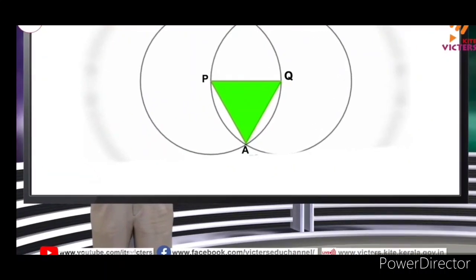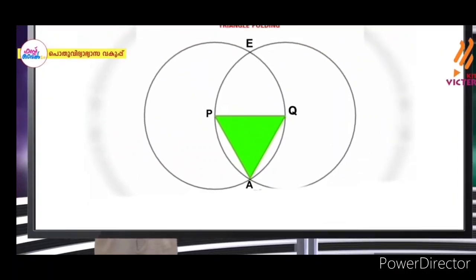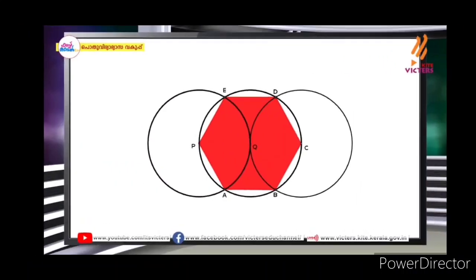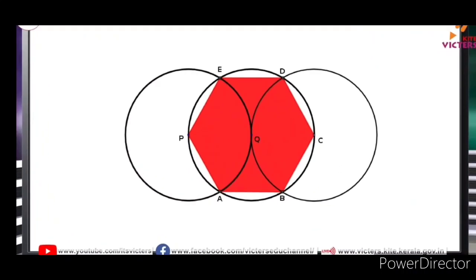The green triangle is in the correct position and the two triangles are equal. The middle point is the right triangle. The two triangles are equal and the equilateral triangle is equal.